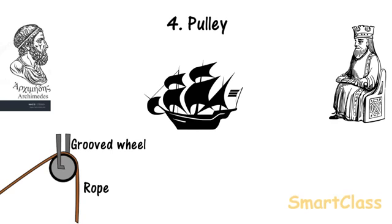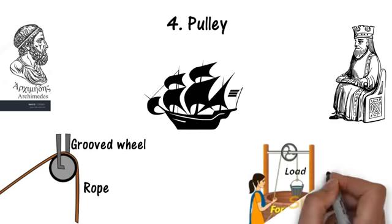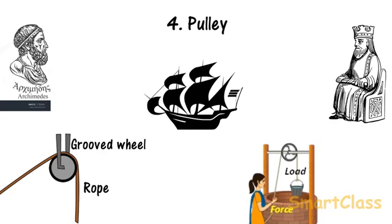Pulley is normally fixed to support above the load. Load is tied to one end of the rope and the effort is applied at the other end. Pulley makes work easy and simple by changing the direction of force. Downward force is used to lift the load up. It is easier to pull down than to pull up. Pulley is used to pull water from a well.